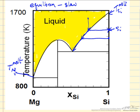We'll talk about what happens there in a minute. This whole region is liquid and solid silicon in equilibrium. So this region here, crosshatched, is a two phase region.